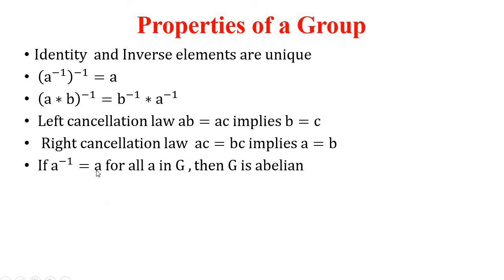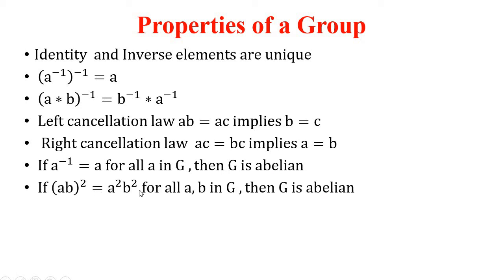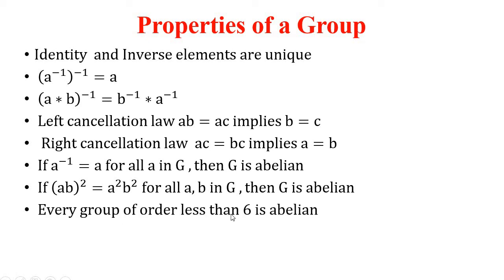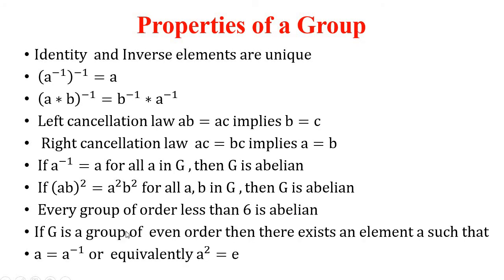In any group, if a-inverse equals a for all a in G, then that group is an abelian group. Similarly, if (ab)² equals a²b² for all a, b in G, then G is also an abelian group. Every group of order less than 6 is an abelian group. If G is a group of even order, then there exists an element a such that a equals a-inverse, or equivalently a² equals e.